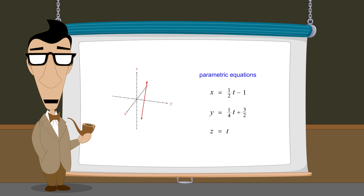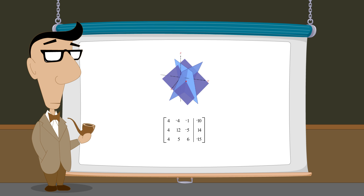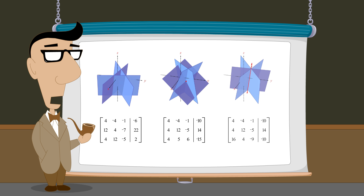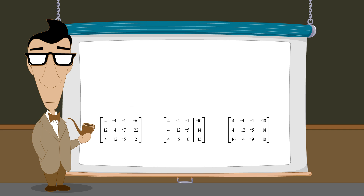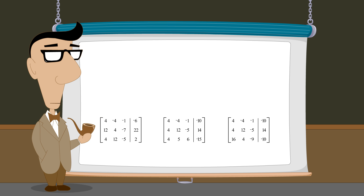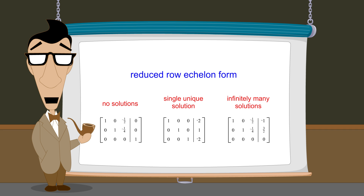Before we describe the solutions of a system, we first need to know what type of solutions the system has. Is it possible to tell if a system has a single unique solution, no solutions, or infinitely many solutions by simply looking at the matrix? The answer is yes, once the matrix is in reduced row echelon form. So let's see exactly how this is done.